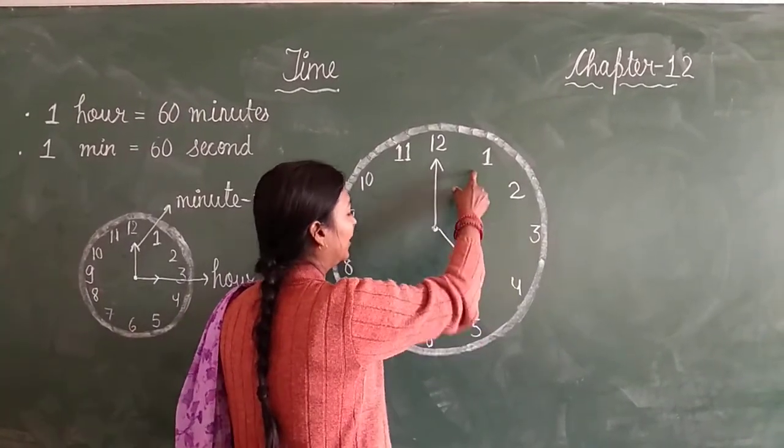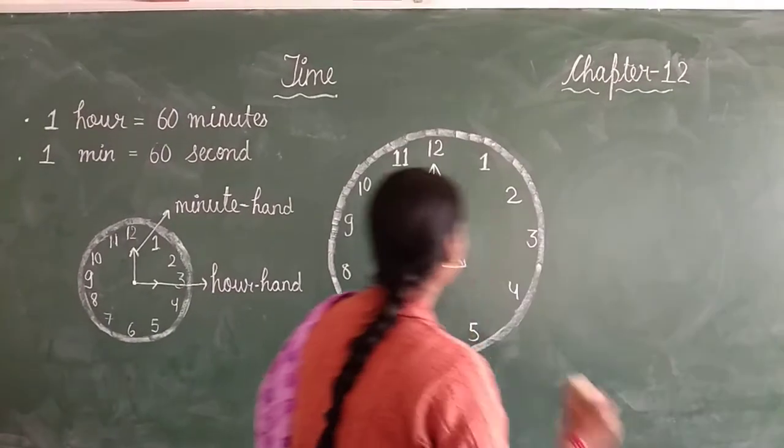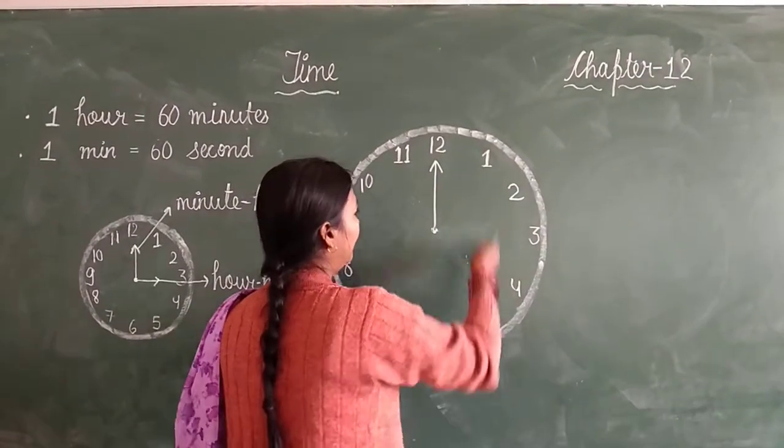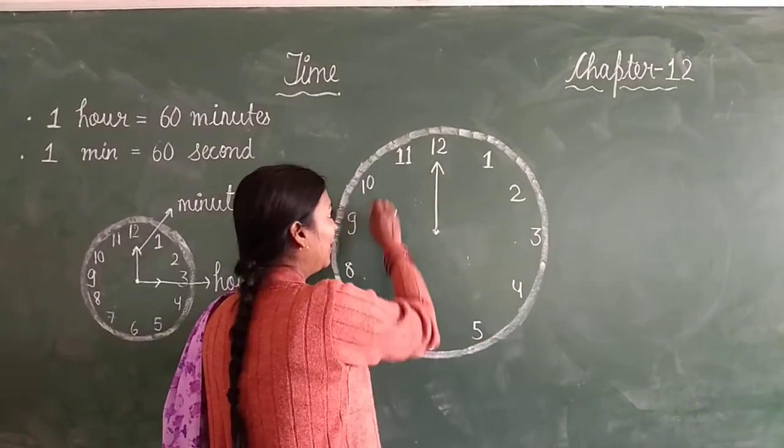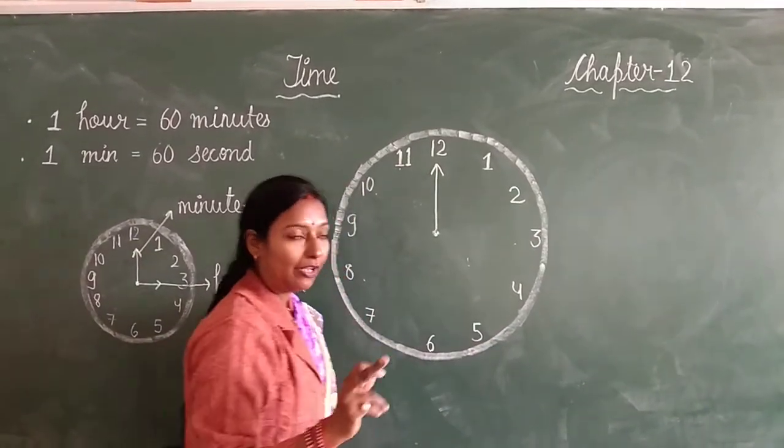You know this short hand, whenever it will be on 1 or 2 or 3 or 4 or at any number, that's called o'clock.